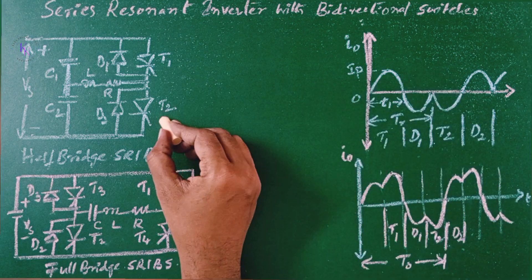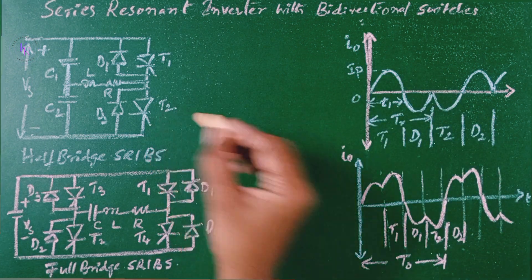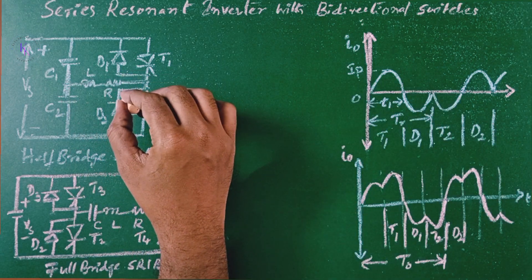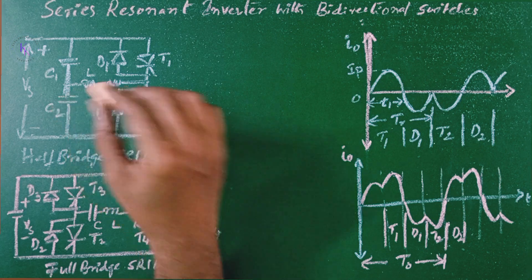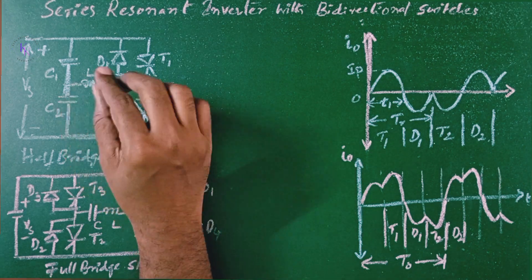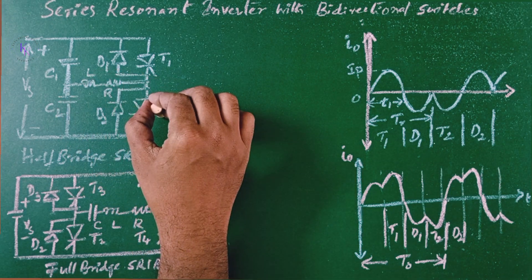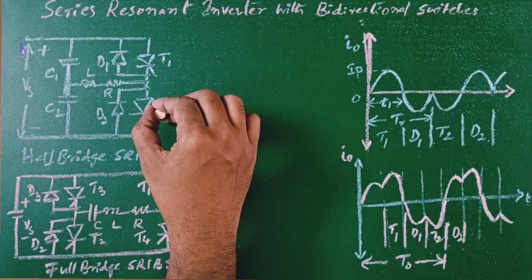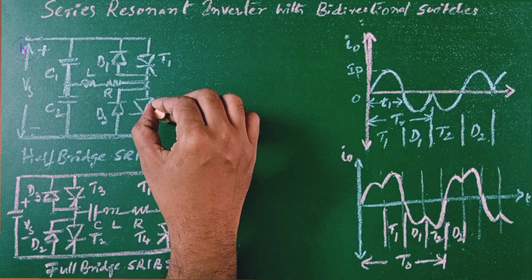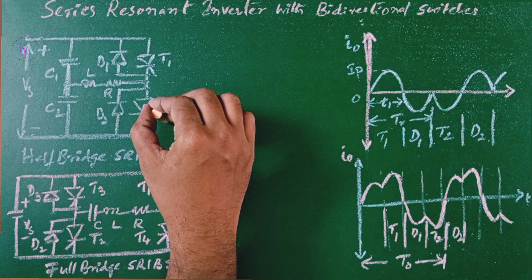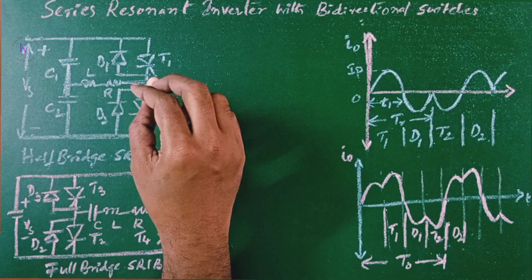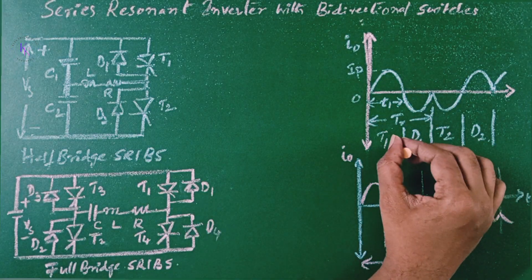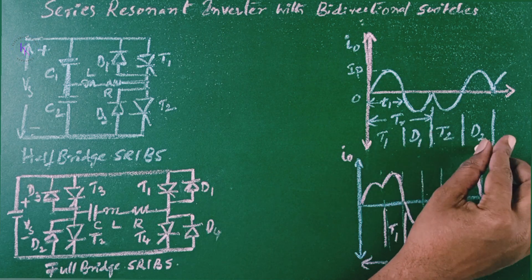So after that when we turn on the thyristor T2, the negative current is going to flow through the T2 and the C2 is going to make a resonant circuit between C2, L, R and T2 which is responsible for the reverse current to flow through the thyristor T2 and which is going to make the thyristor T2 turn off by self. Then, the capacitor is going to discharge through the diode D2. So, these are the times when T1, D1, T2, D2 are turned on.